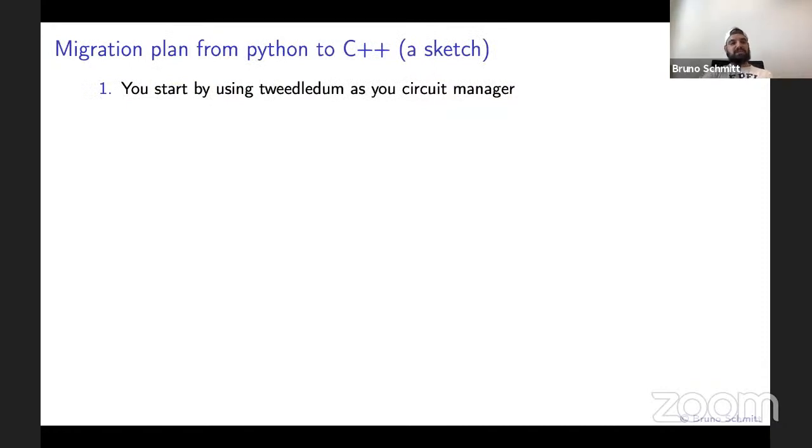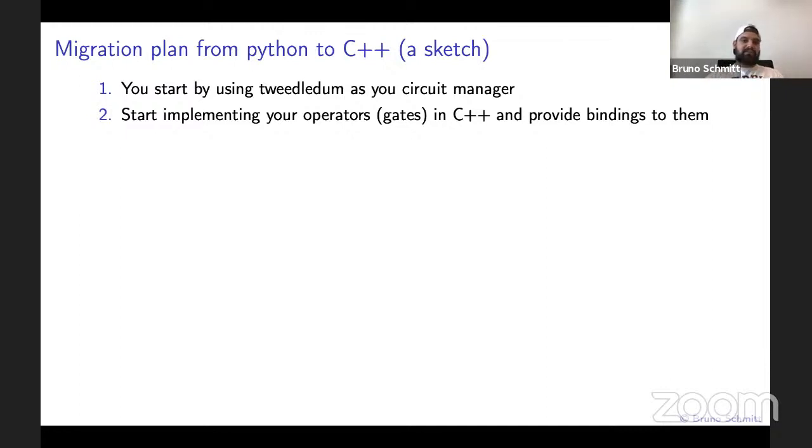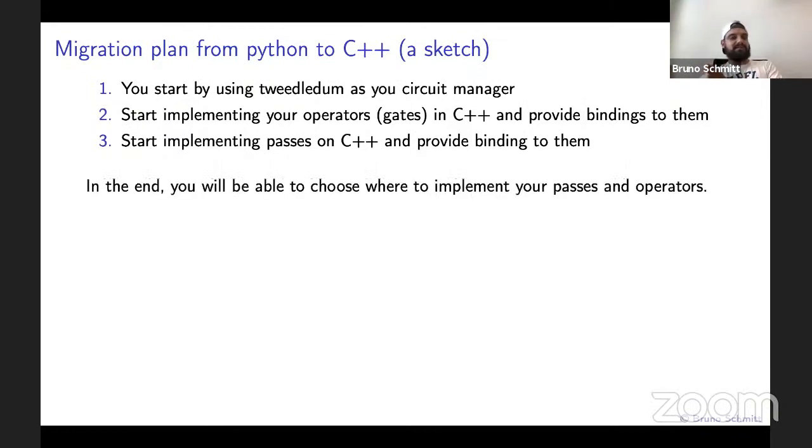If you want to migrate your Python framework down to C++, here's somewhat of a sketch of what you can do. You can start by using Tweedledom as your circuit manager. Here I assume that your circuit data structure is definitely decoupled from the rest of your data structures and you don't have passes that poke into the internals. Then you can start implementing operators gates on the C++ side and providing bindings to Python. Then you can start implementing or translating some passes from Python to C++.